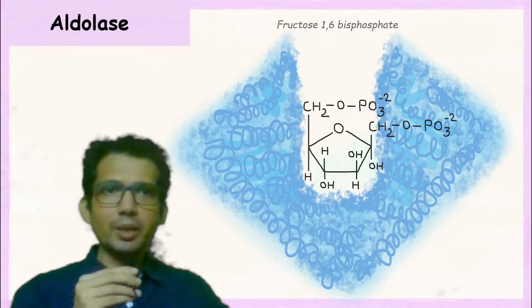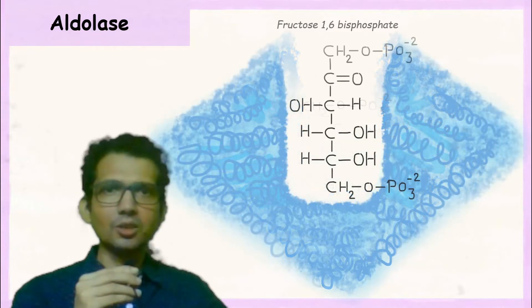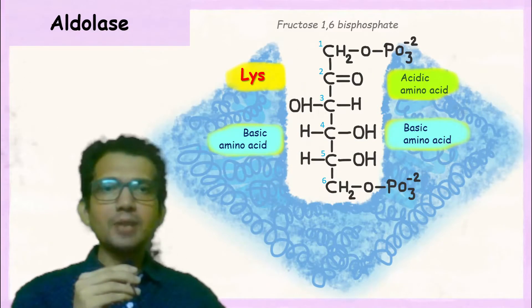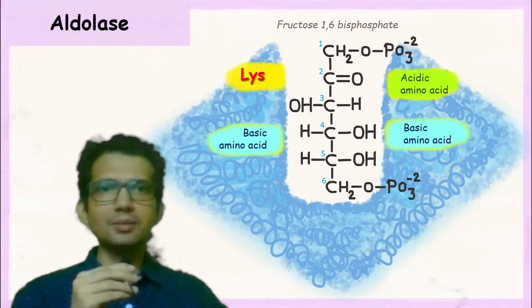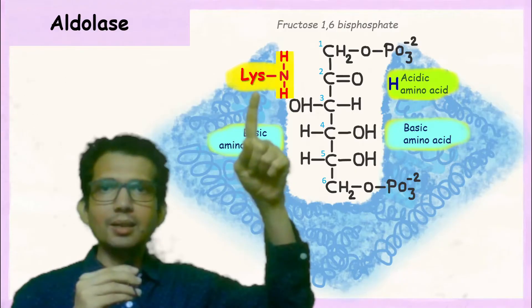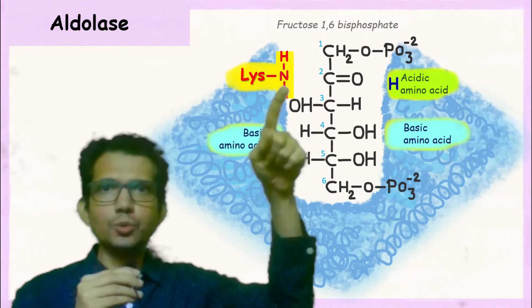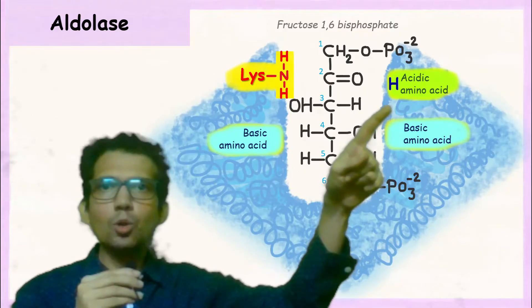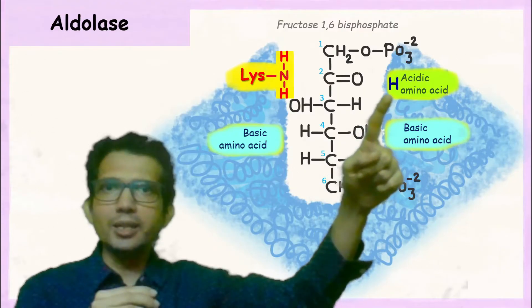Once the substrate binds, the ring structure is first converted into the linear structure. The active site of this enzyme has lysine along with acidic and basic amino acids. The functional group present with lysine is NH2. The acidic amino acid has COOH group which can donate its hydrogen.